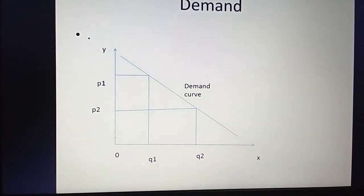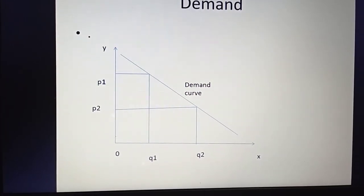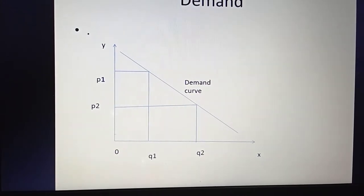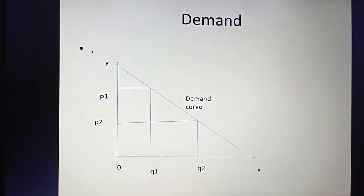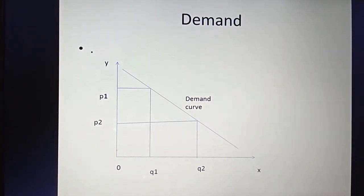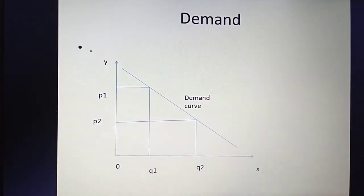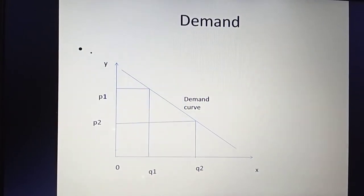When the price of a commodity is OP1, the quantity demanded of that particular commodity is OQ1. But when price reduces to OP2, the quantity demanded of that commodity increases to OQ2. So from this diagram we can say that if price falls, the quantity demanded increases, and if price increases, the quantity demanded falls.